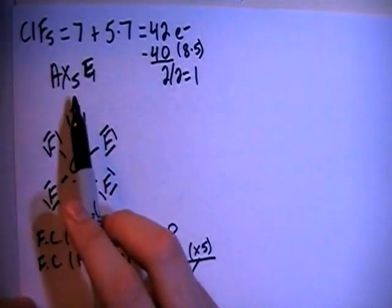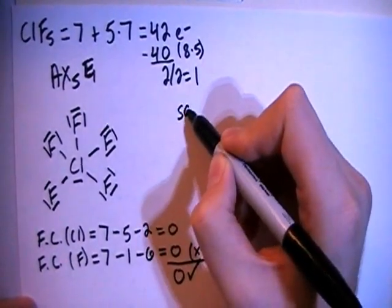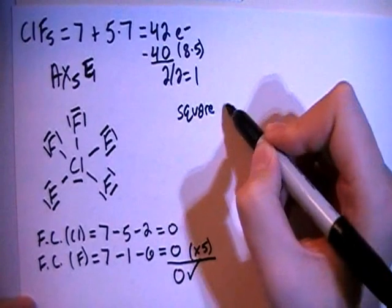Now, when we have the AX5E1 structure, that means that the shape is going to be called square pyramidal.